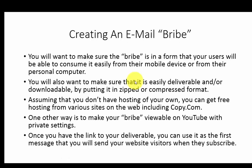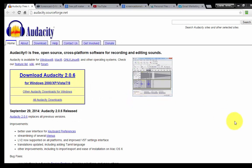Once you have the link to that deliverable, you can use it as the first message — or part of the first message — that you'll send your website visitors when they subscribe. It's important to do this because you typically want them to go through the opt-in process, where they have to confirm their email address. When they confirm their email address, they will then receive your bribe and deliverable. Now let's go through some of these basics on screen.